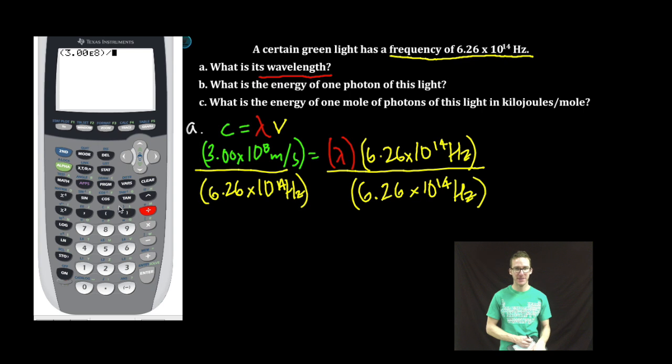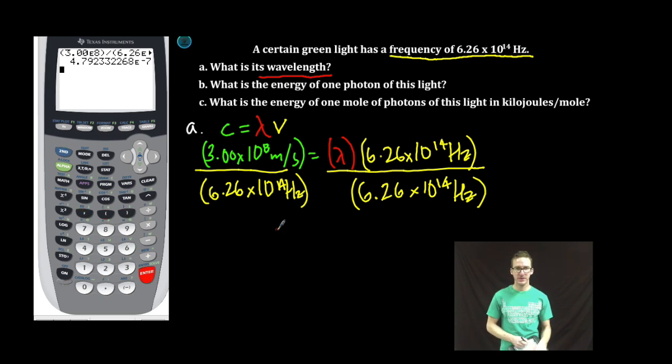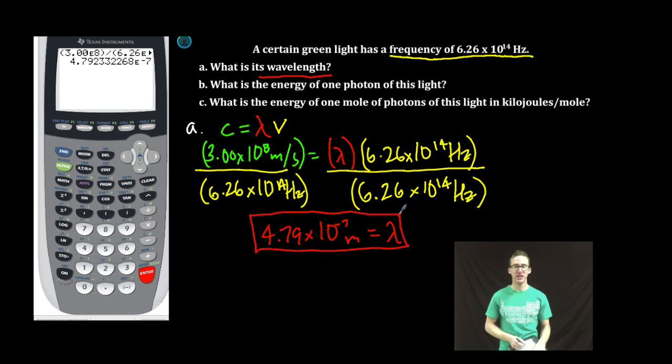Parentheses, 3.00, second E, 8, close parentheses, divide by new parentheses, 6.26, second E, 14, close parentheses, enter. To three significant figures, 4.79 times 10 to the negative 7 meters is my wavelength. Boom, part A is finito.